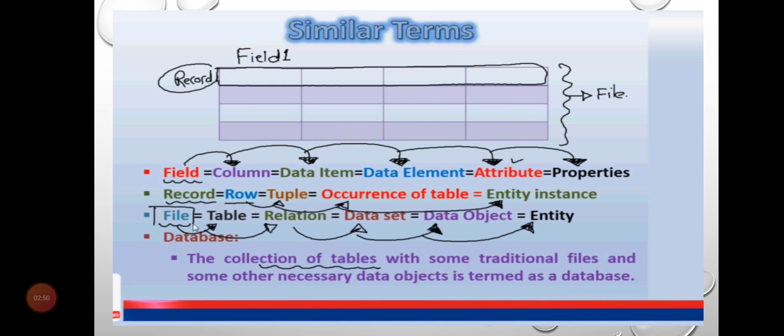Field equals column, equals data items, equals data elements, attributes, and properties. Record equals row, tuple, occurrence of the table, and entity instance. File equals table, relation, data set, data object, and entity. The database is the collection of tables with some traditional files and other necessary data objects.